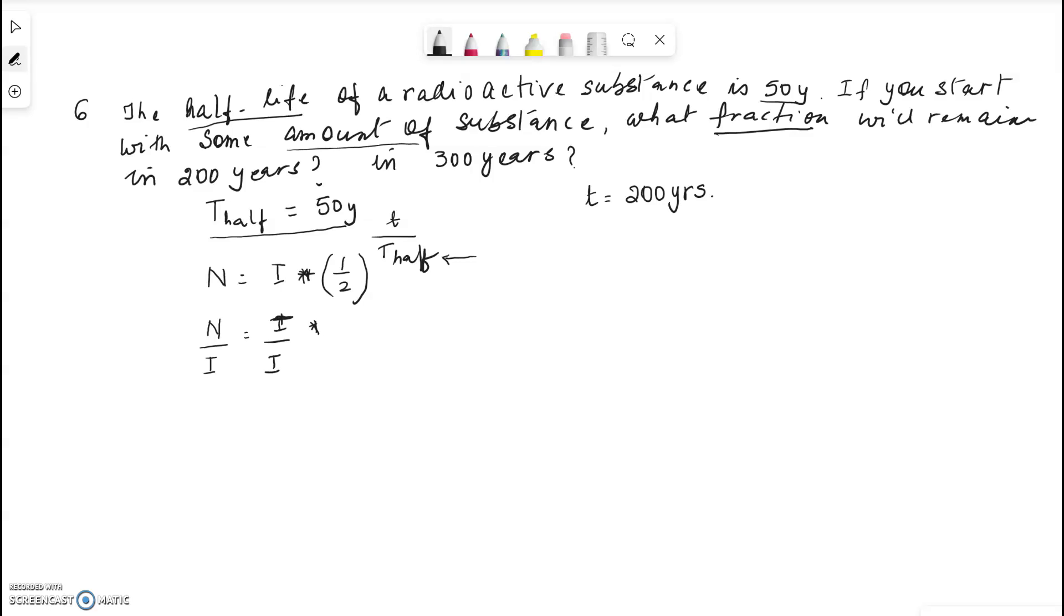So this is one half to the power of t, which is 200 years, divided by t half, which is 50 years. And that is N over I. This gives us the fraction. This is the fraction that we're looking for. The fraction that will remain after 200 years.